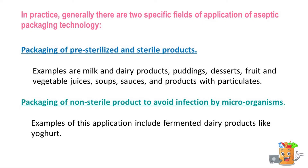In practice, there are generally two specific fields of application of aseptic packaging technology. The first one is packaging of pre-sterilized and sterile products. Examples are milk and dairy products, puddings, desserts, fruit and vegetable juices, soups, sauces, and products with particulates.